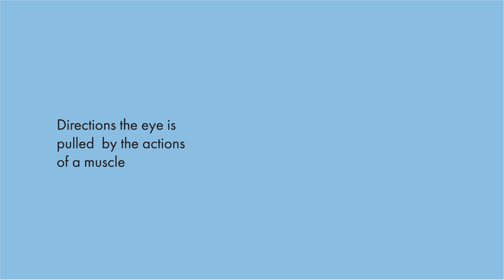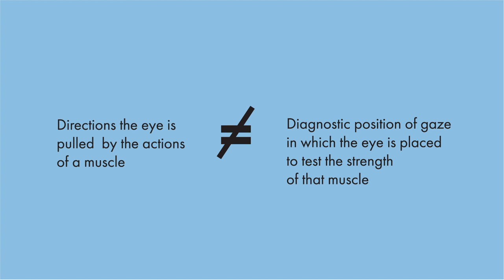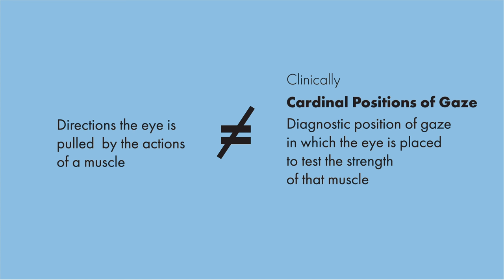With the exception of the horizontal rectus muscles, the direction the eye is pulled by the action of a muscle does not correspond to the diagnostic positions of gaze in which the eye is placed to test the strength of that muscle. So keep in mind that isolating and testing eye muscles clinically is different from their anatomical actions.